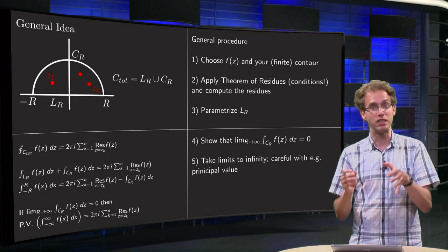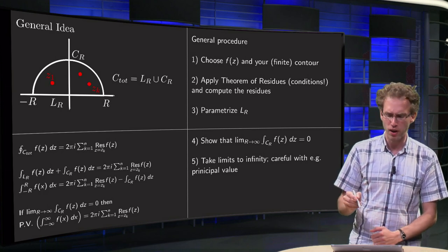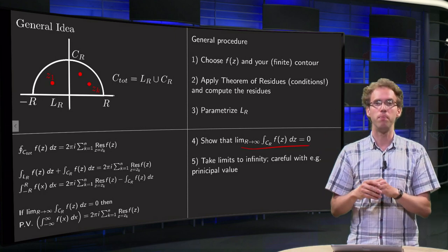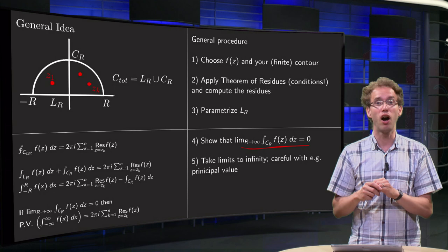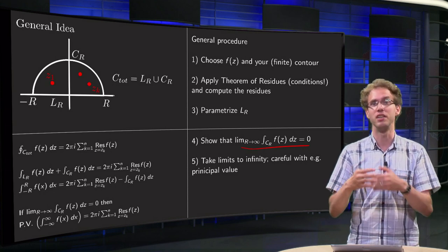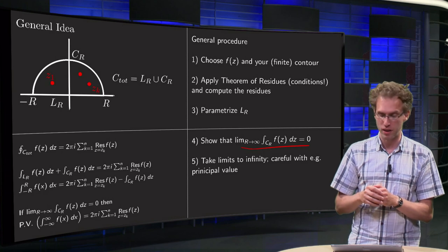Step 4, that's a big step, usually involves quite some work. You show that this integral along your big circular arc vanishes. So you have to get rid of some other integrals. In this case, show that one integral vanishes.